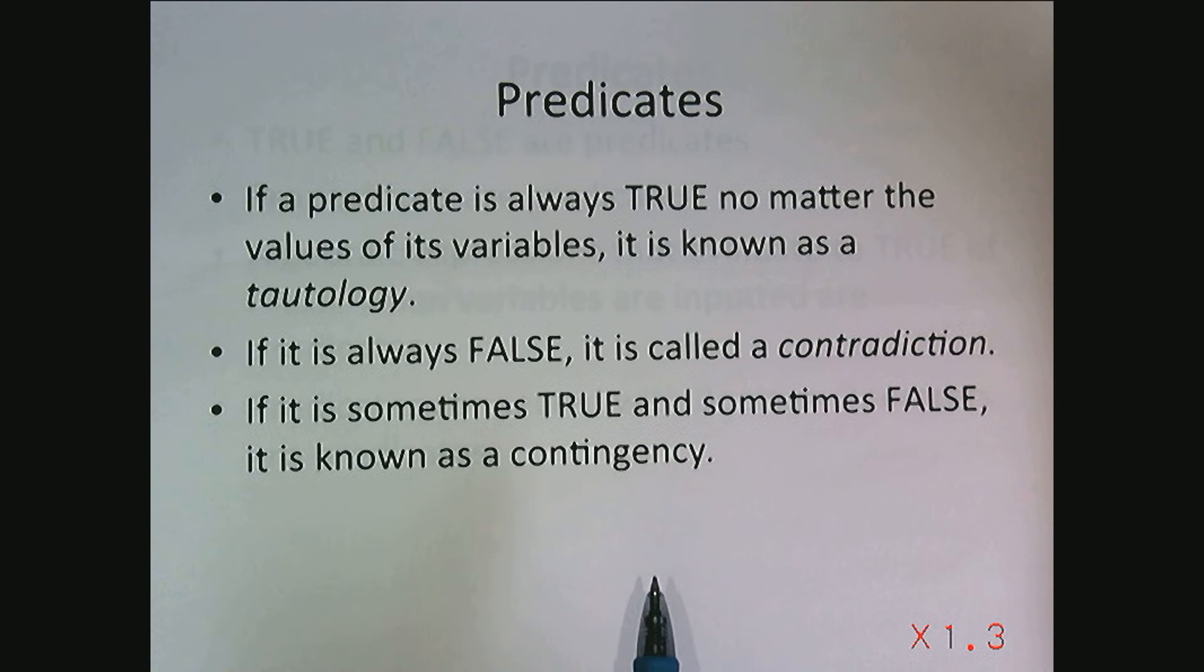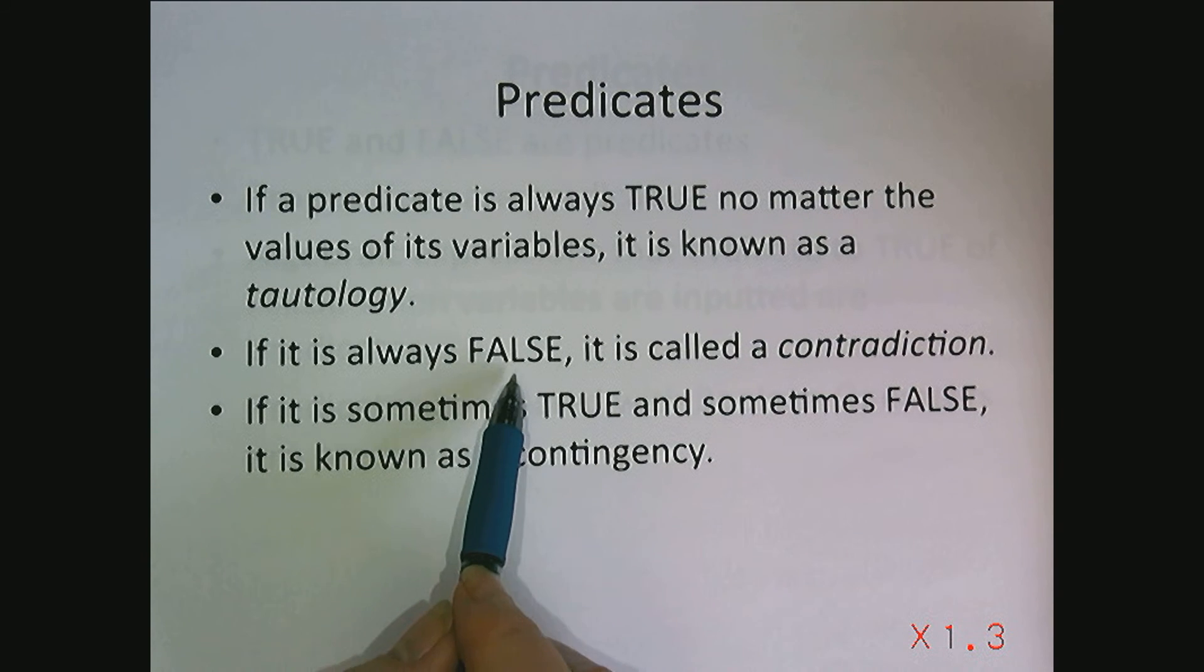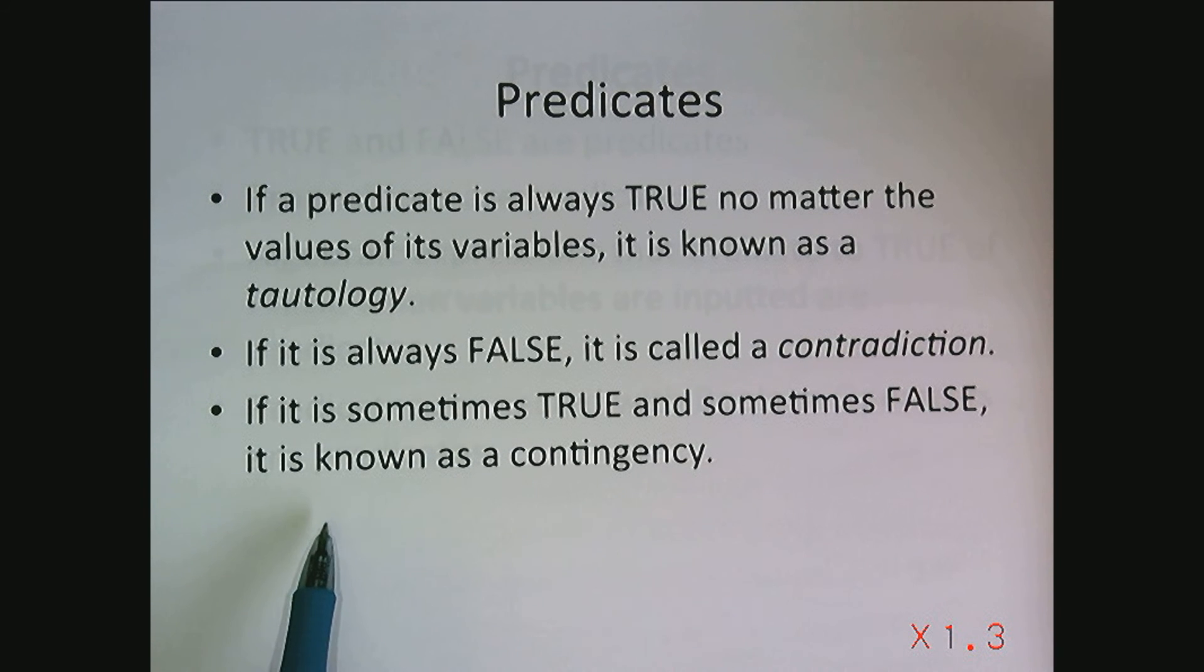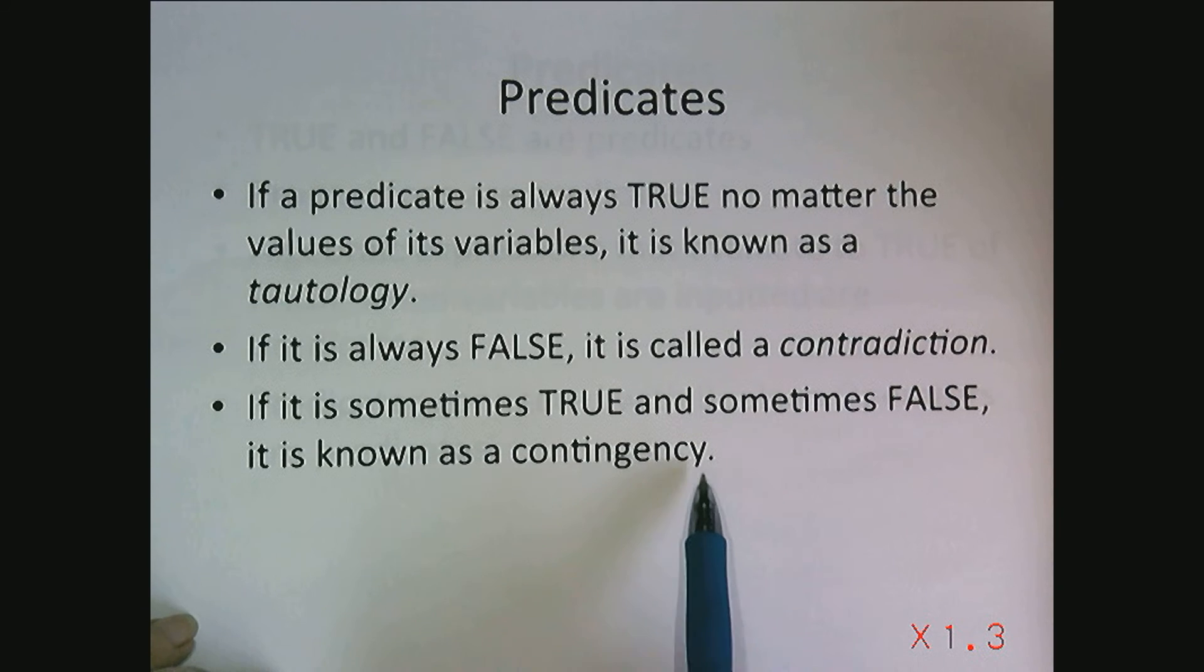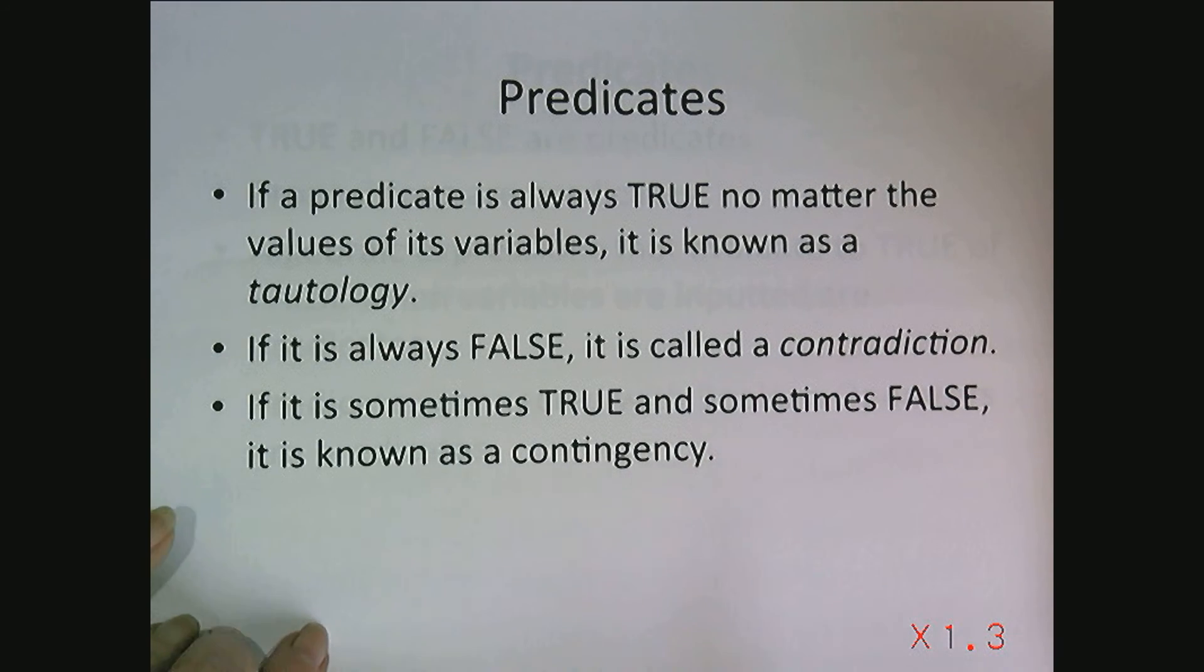If a predicate is always true no matter what values of its variables it's known as a tautology. If it's always false it's called a contradiction. If it's sometimes false and sometimes true, it's known as a contingency. Most of the time we're going to be dealing with contingencies but often what we'd like to do is to show that something is a tautology, always true.